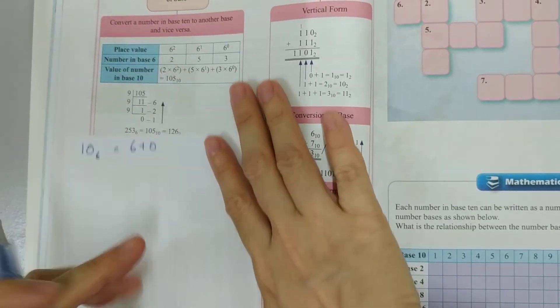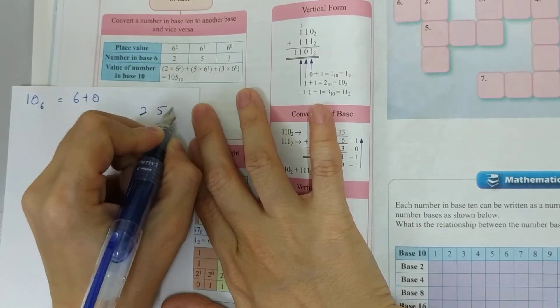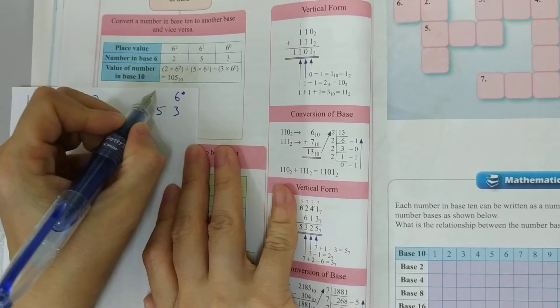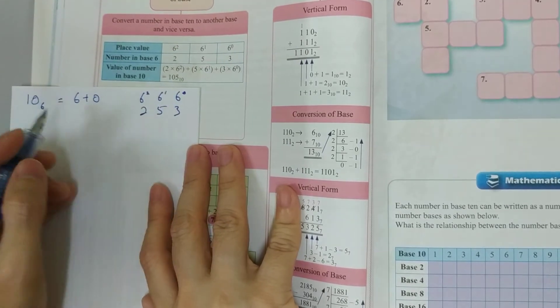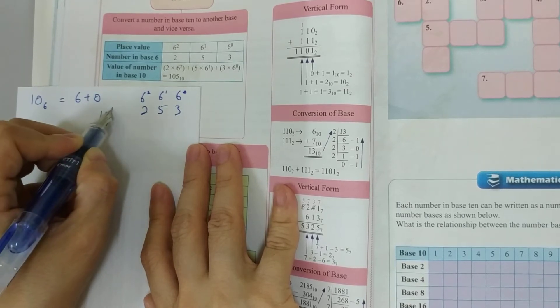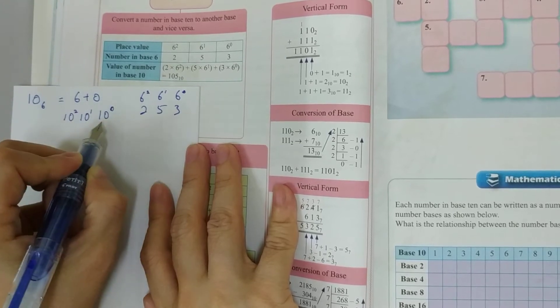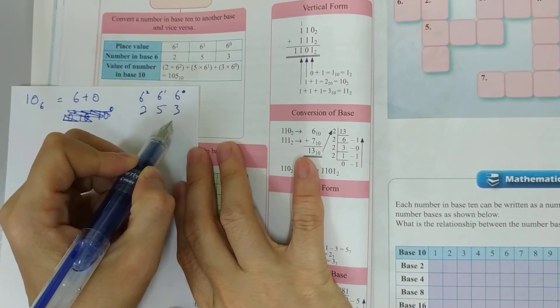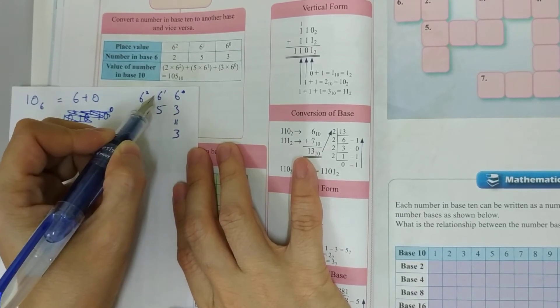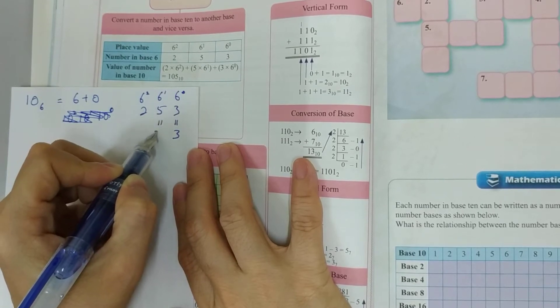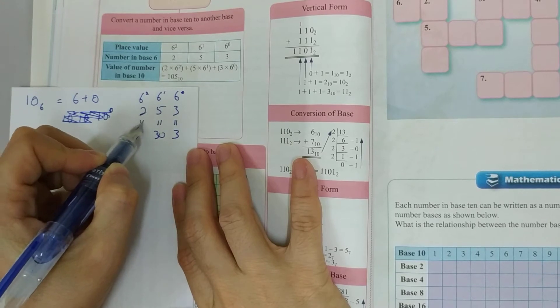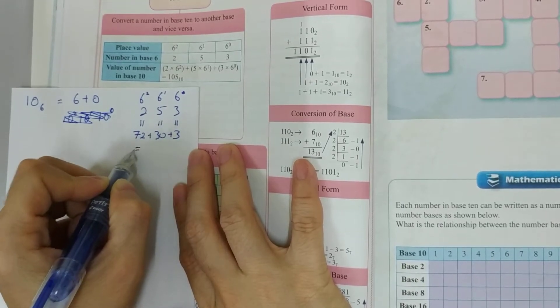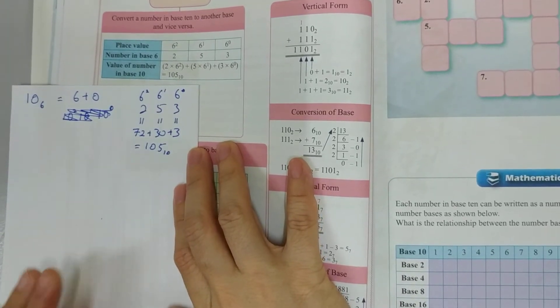So what we have to do is the 253, because it's base 6. Now the lowest number always starts with 6 to the power of 0, which is the ones, and then 6 to the power of 1 and 6 to the power of 2. Just like our numbers, we have 10 to the power of 0, 10 to the power of 1, 10 to the power of 2, and so on. So with this, 1 times 3 is equal to 3. And then this is 6, 6 times 5 is equal to 30. And then 6 squared is 36, 36 times 2 will be equal to 72. And then we add all of this up to get 105. And this is in our normal number, our base 10.